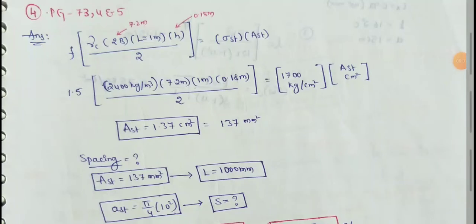Next topic: Rigid Pavement. Here we have Longitudinal Joints and tie bars. Tie bars provide different spacing; they are placed in longitudinal joints. We will look at tie bar spacing and minimum length — we have a formula for that.